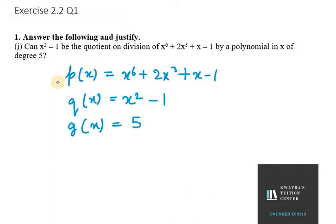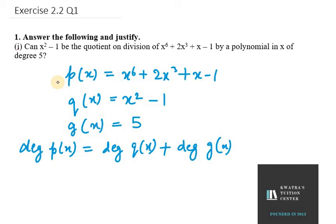So we need to find whether it is possible or not. So in this case, we know one formula that is degree of P(x) equal degree of Q(x) plus degree of g(x). So in this, we know the degree of P(x) is 6, the highest power is 6.